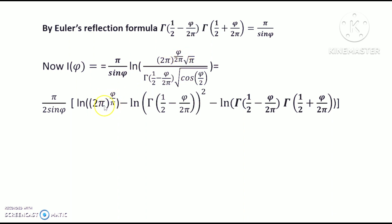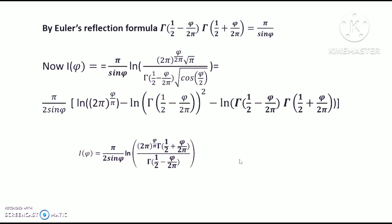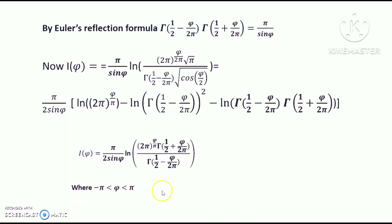Since φ/2·φ can be written as φ/φ with 1/2 multiplied in, and this forms a complete square, I get the final value: I(φ) = π/sin φ · ln[Γ((2π − φ)/(2π))/Γ(φ/(2π))·√(2π)], where φ ∈ (−π, π).